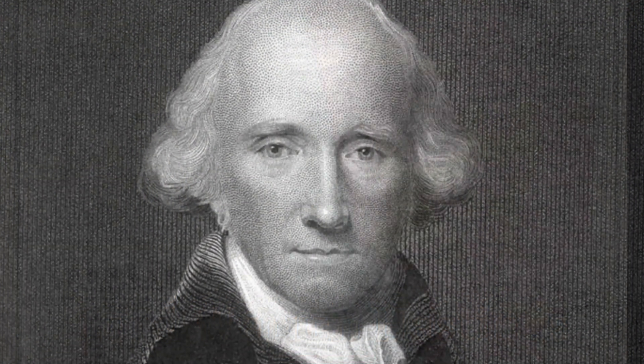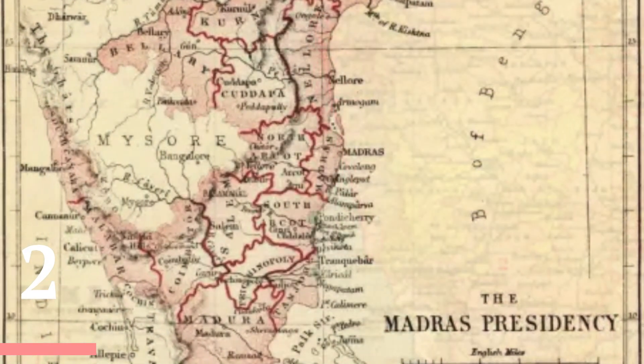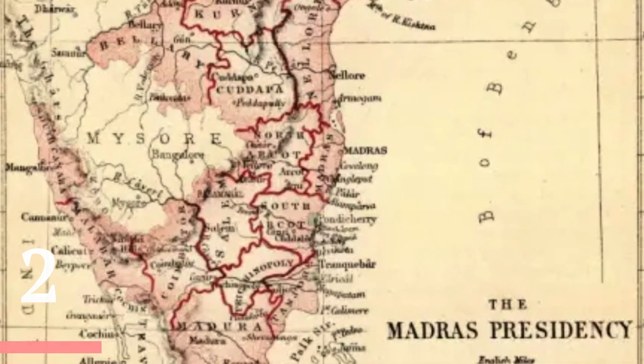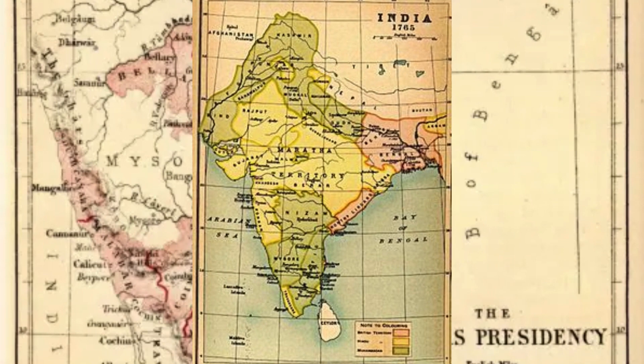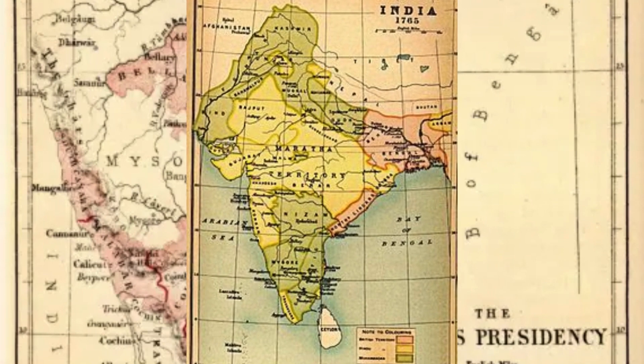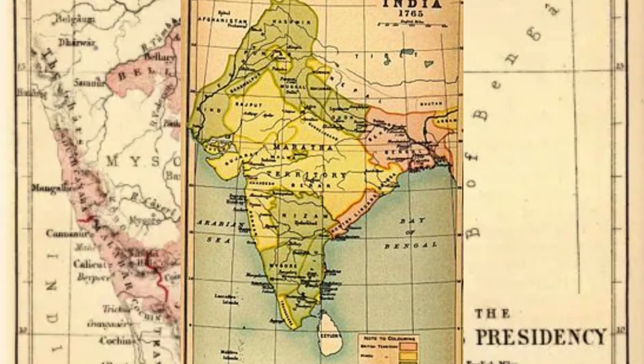2. It made the governors of Bombay and Madras presidencies subordinate to the Governor-General of Bengal, unlike earlier when the three presidencies were independent of one another.